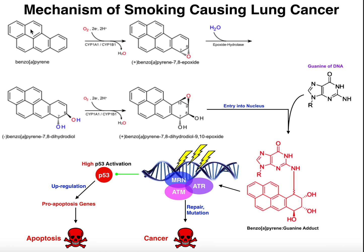So when you smoke a cigarette, you're going to be inhaling a compound such as this — this is the best example. This compound is going to end up in your body, but this in and of itself does not cause cancer. It's actually a metabolic product of it that will.